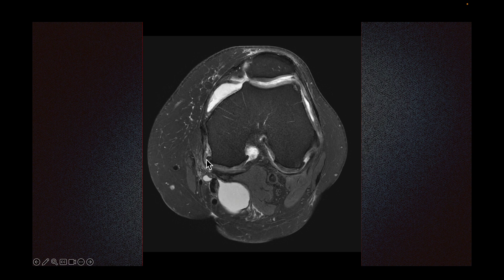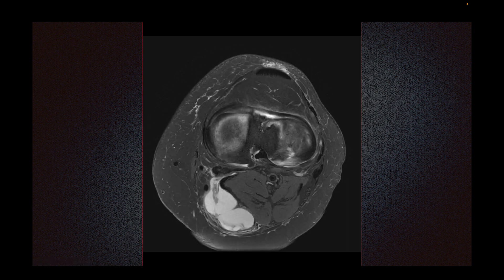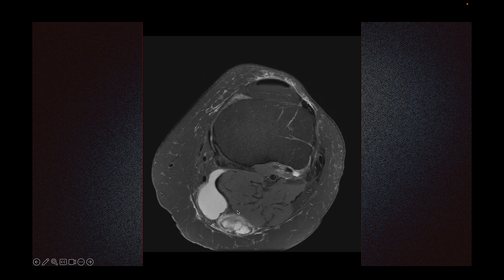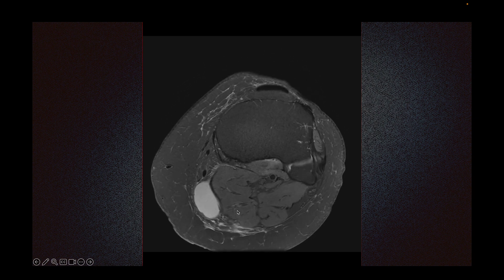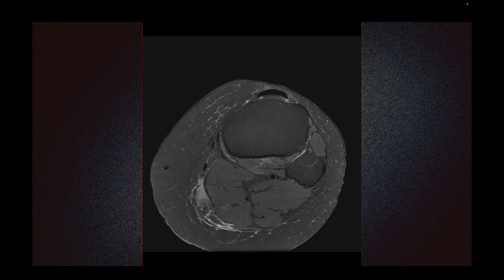This person also has degenerative changes and joint effusion, which we will not focus on. There is some debris and septation in the cyst. As we scroll down, we see edema around the cyst. This indicates that the cyst has leaked or ruptured, and sometimes this can cause pain.